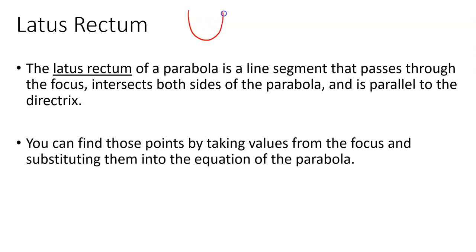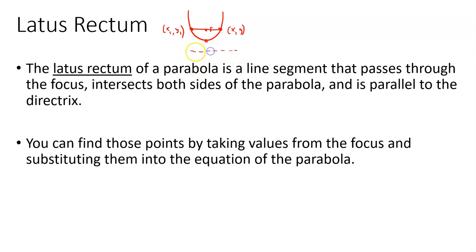So suppose you've got your standard upward opening parabola. There's your vertex. Let's say this is the focus. The latus rectum is a segment that goes from here through the focus over to the other side. Sometimes when we look for the latus rectum, we're really looking for the endpoints — an x, y on this side and another x, y on that side. It says it's parallel to the directrix, because if this thing opens upward, then the directrix itself is horizontal — it's a y equals something. So the latus rectum will also go from left to right. If it opens sideways, then it's going to be the segment that goes like this.